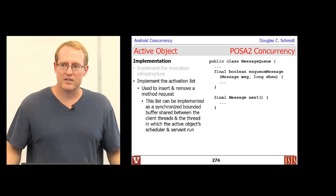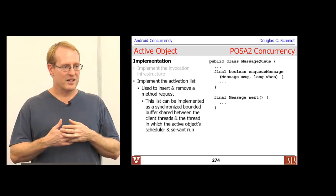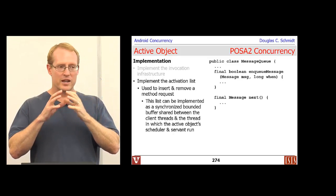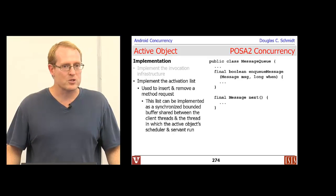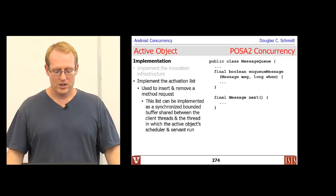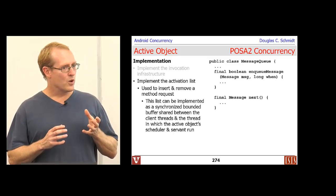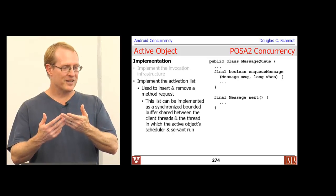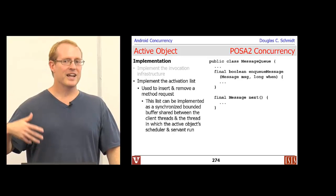The next thing you need to implement is the activation list — the thing that keeps track of method requests. A method request is an objectification of a method call; it stores information about the parameters and other information necessary to identify what method was invoked. You need some way to insert and remove these method requests into a data structure called an activation list. This list is typically implemented as a synchronized buffer where one or more threads can put requests in simultaneously in a thread-safe way, and one or more threads can take things out in a synchronized and thread-safe way.